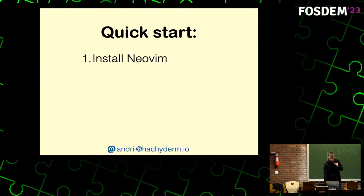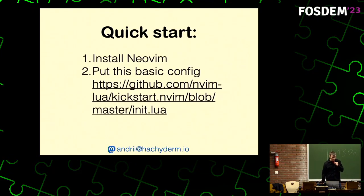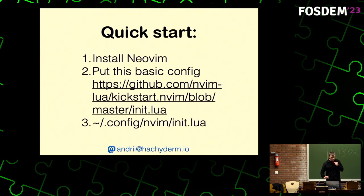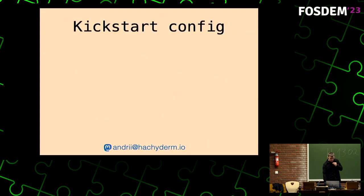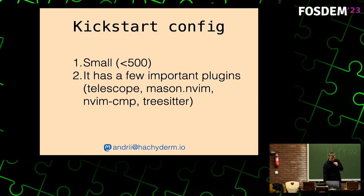I assume you know how to install Neovim. If you never did it before, I highly recommend starting with this one-file config — put it in your config location. It's very small and has a few important plugins to help you try it out. I highly recommend it because it's easy to start small and simple, rather than thinking you need lots of files and a whole repo for your configs right away.